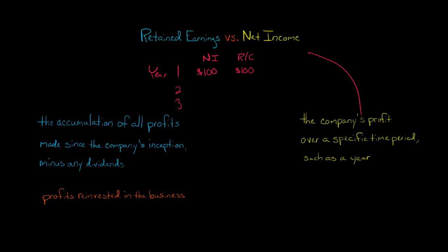In year two, the company again has $100 of net income and again no dividends. So the retained earnings at the end of year two would be $200.